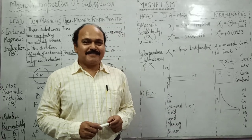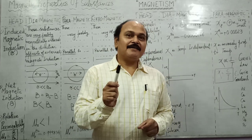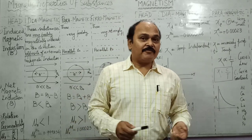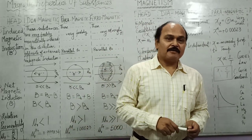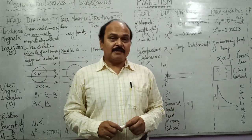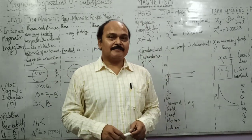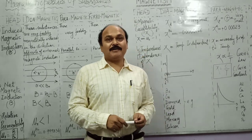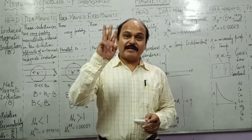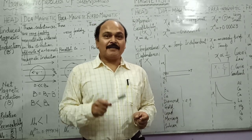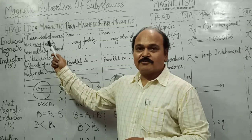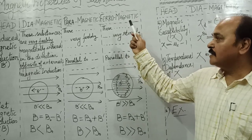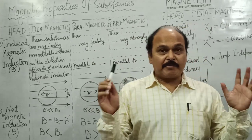Hello my dear children. Today we will study magnetic properties of substances. On the basis of behavior of a substance in a magnetic field, all substances have been classified into three categories: diamagnetic, paramagnetic, and ferromagnetic. We will study these three types of substances.